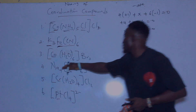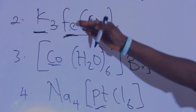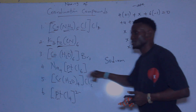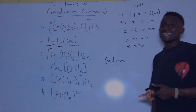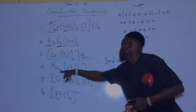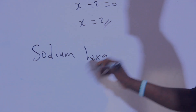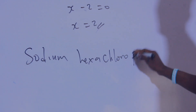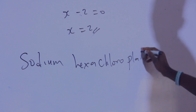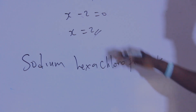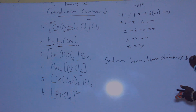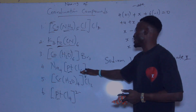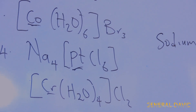This follows the same trend as the second compound. We have sodium first, then six chloro ligands — hexa — giving hexachloro, and the central atom on the anion side is platinate with oxidation number two. The full name is sodium hexachloroplatinate(II).